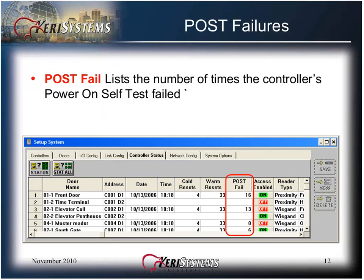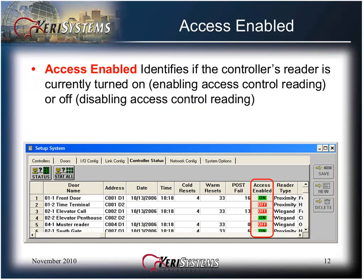A POST fail lists the number of times the controller's power-on self-test failed. This is indicative of a RAM or controller power issue. One is okay; more than one needs to be investigated. The access enabled column identifies if the controller's reader is currently turned on, enabling access control, or off, disabling access control reading.